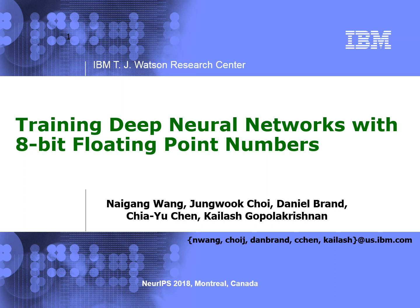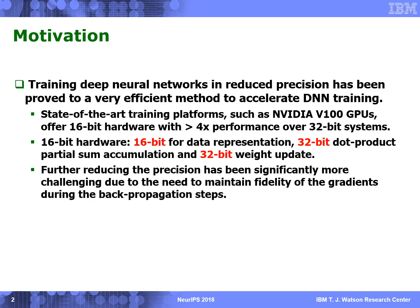In this video, we introduce our paper on training deep neural networks with 8-bit floating-point numbers. Training deep neural networks in reduced precision has been proved to be very efficient to accelerate DNN training. State-of-the-art training platforms offer 16-bit hardware, which can speed up the training by 4x compared to 32-bit systems.